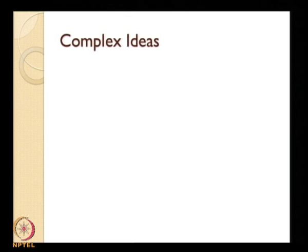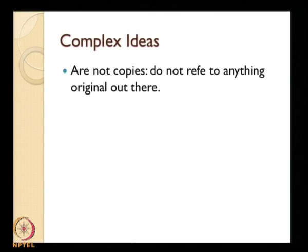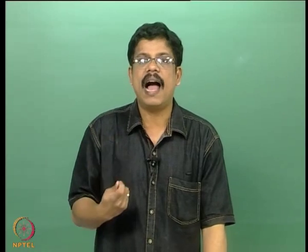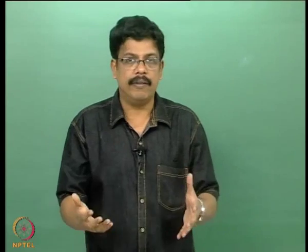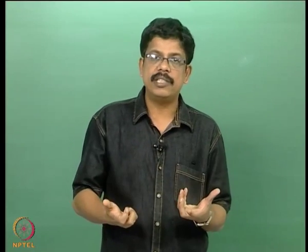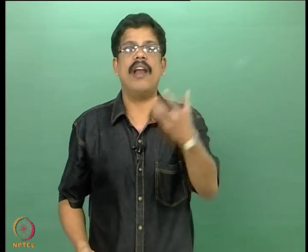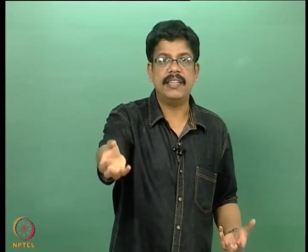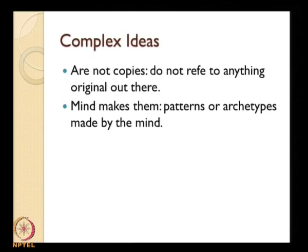When we talk about complex ideas, they are not copies — they do not refer to anything original out there. For example, when I talk about my simple idea of sweetness there is something outside which produces it, but when I talk about an apple, from the perspective of an empiricist epistemologist who relies only on ideas, we cannot ascertain the existence of an apple as an object — only qualities like red color, round shape, sweet smell, and so on. These qualities are the ideas, and it is the reflective capacity of the mind which combines, compares, and compounds them. The complex idea of substance is the most interesting and controversial of these.